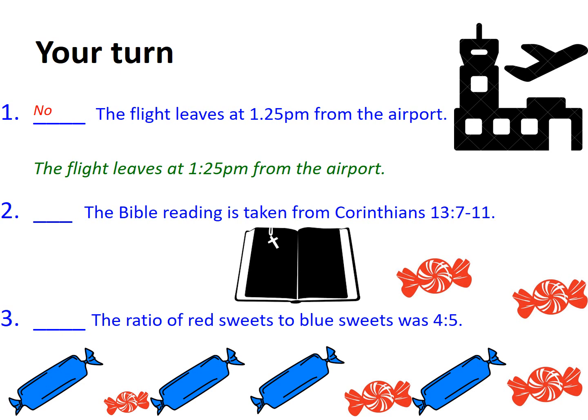Example two: the Bible reading is taken from Corinthians chapter 13, colon, verses 7 to 11. This is correct. Chapters go before the colon and verses follow after the colon — that's a reference we would already know. In speech, someone would say "Corinthians chapter 13, verses 7 to 11" and never say the word colon aloud, so once more the colon is silent.